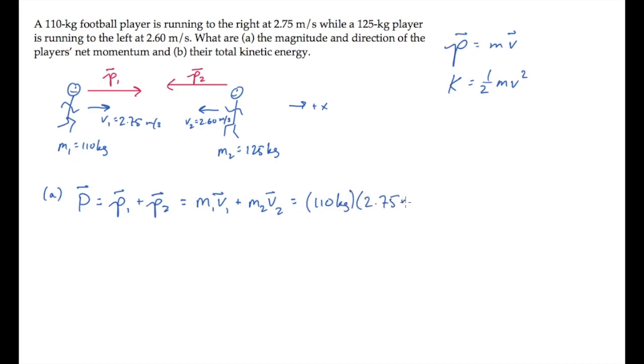For the first player's velocity, we have 2.75 meters per second in the positive x-hat direction. For the second player, it's 2.60 meters per second in the negative x-hat direction, because he's going left.